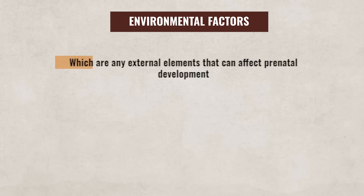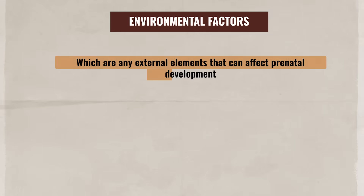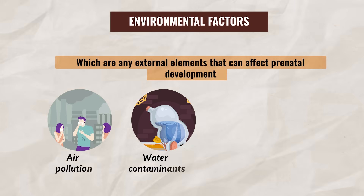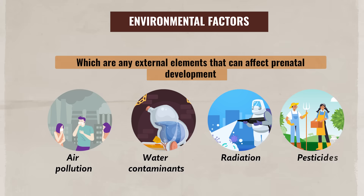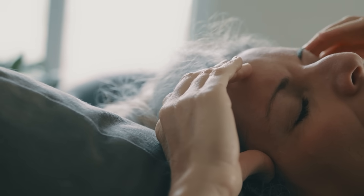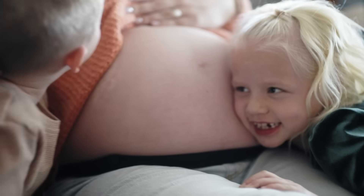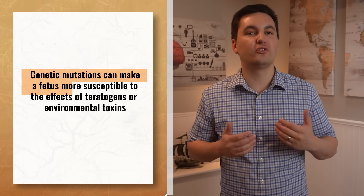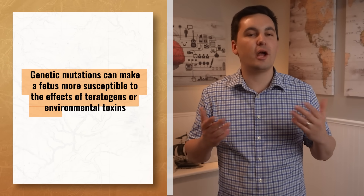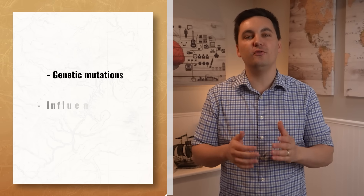Lastly, there are environmental factors, which are any external elements that can affect prenatal development. This could be exposure to air pollution, water contamination, radiation, or pesticides, just to name a few. Research has also shown that maternal stress during pregnancy can impact fetal brain development, highlighting the importance of maintaining a positive and stable environment. Now, while each of these factors impacts prenatal development on their own, they also often interact with each other. For instance, genetic mutations can make a fetus more susceptible to the effects of teratogens or environmental toxins. Maternal illness can impact hormonal balance, which can in turn impact fetal development, or environmental factors can possibly cause genetic mutations or influence gene expression.